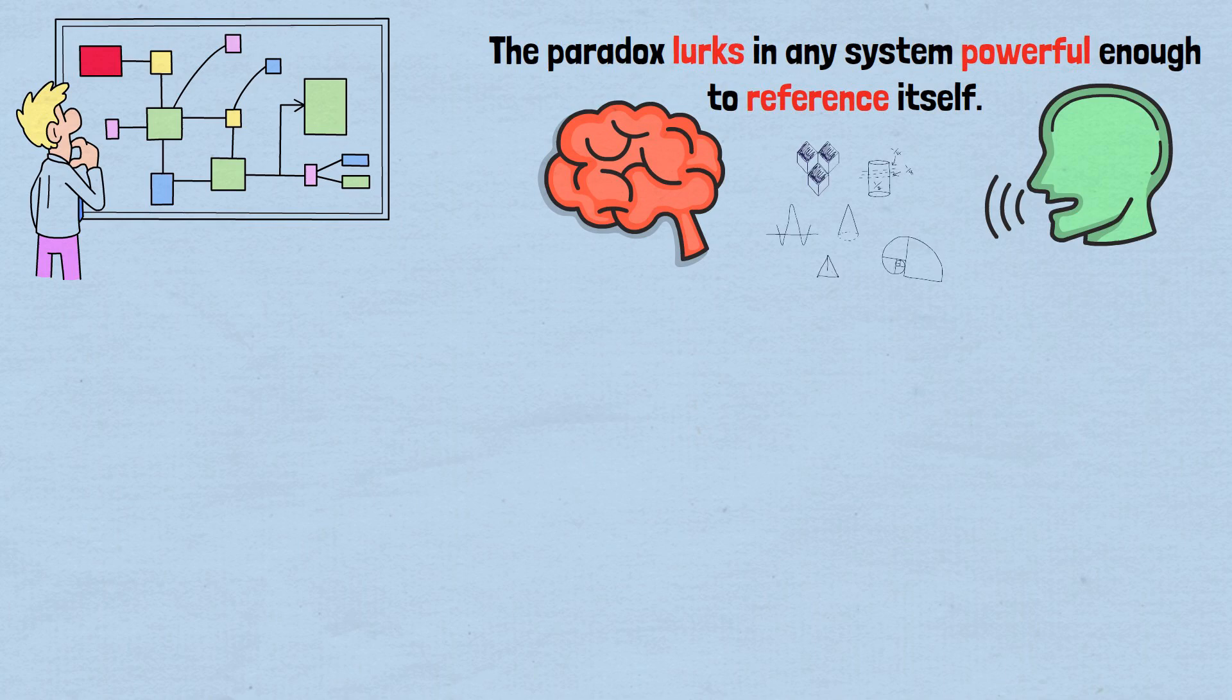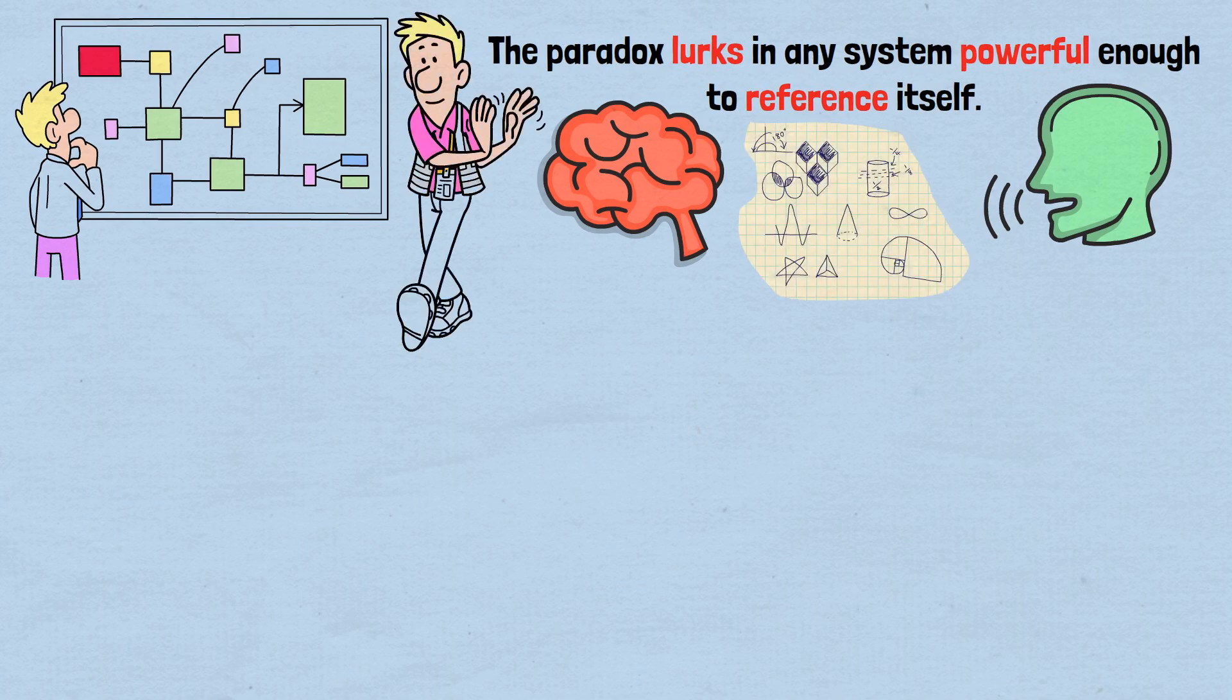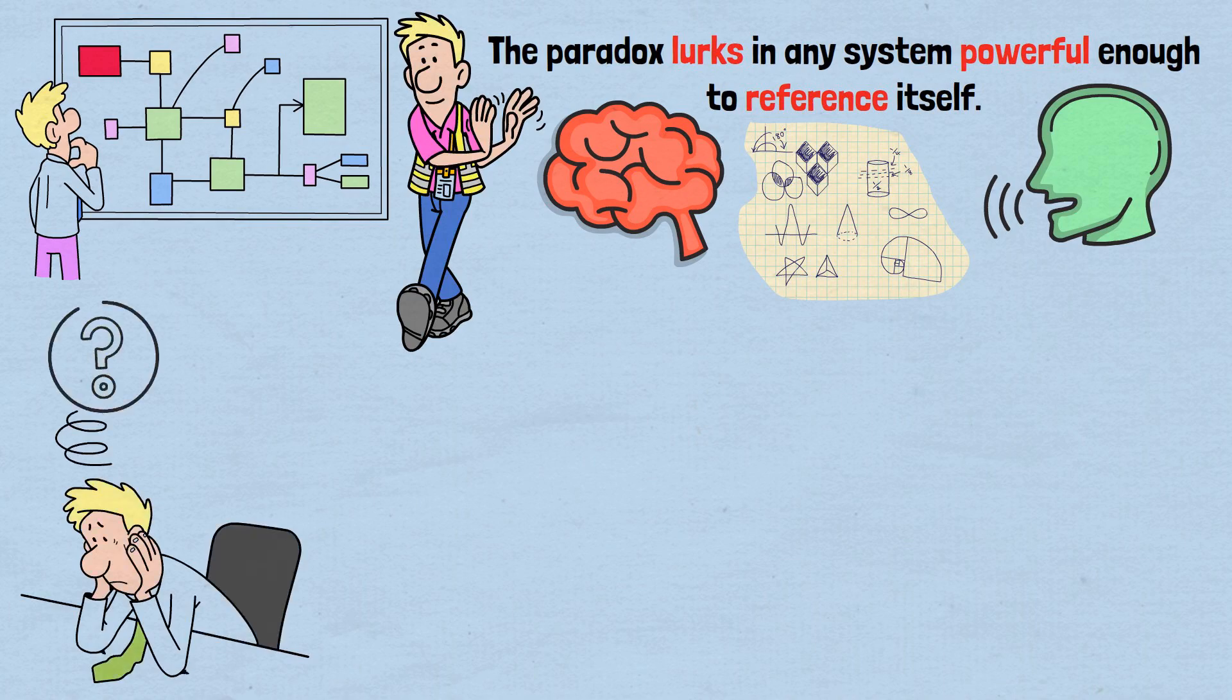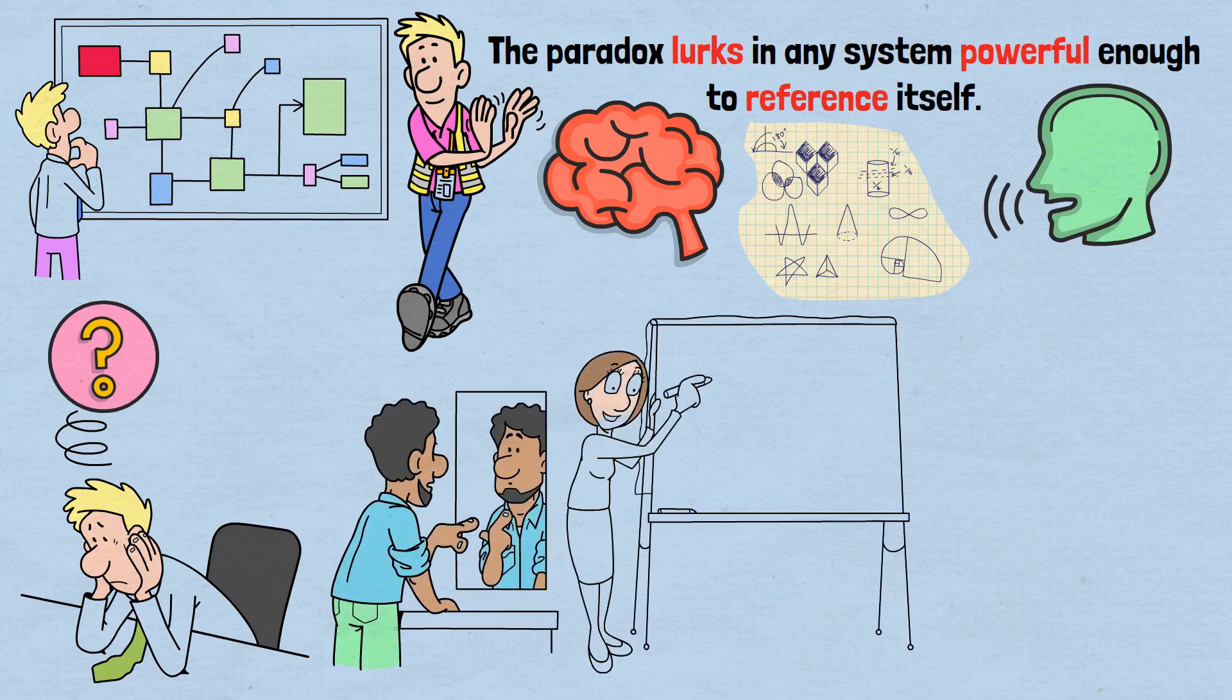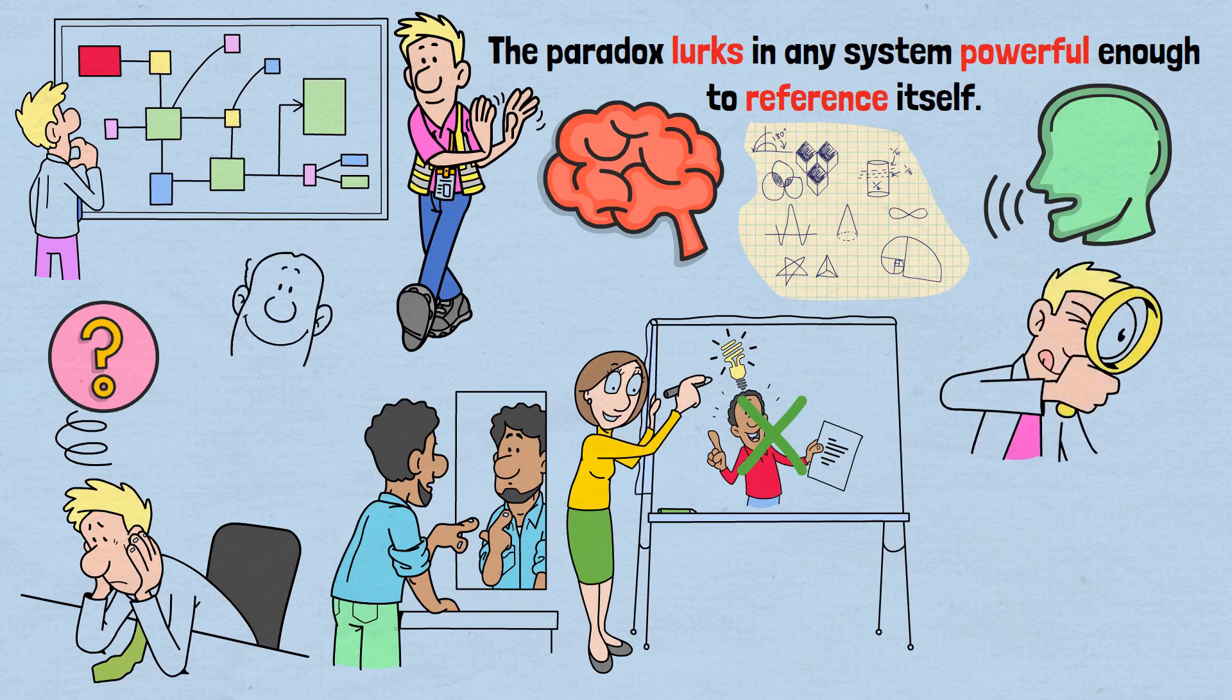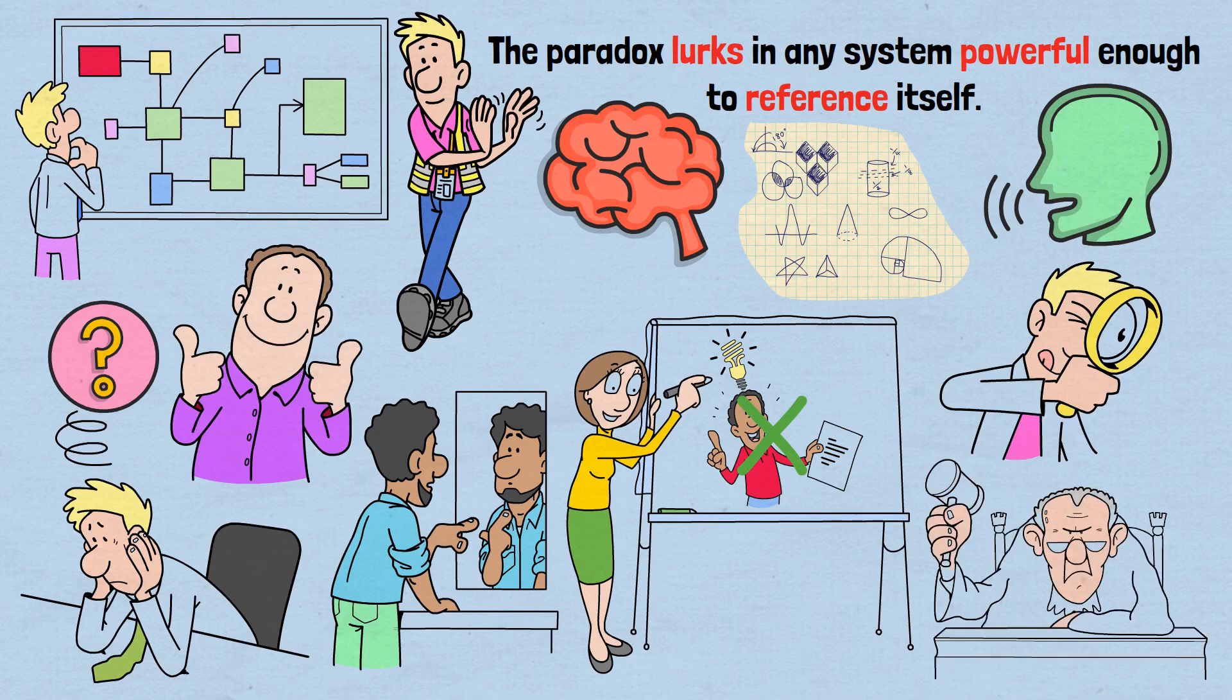In mathematics, we might restrict self-reference to avoid the paradox. But we can't eliminate it from our thinking without losing something essential about what makes us human, our ability to reflect on ourselves. Perhaps the most profound lesson of Russell's paradox is not that we need to solve it once and for all, but that we need to recognize and respect the boundaries it reveals. Just as physical laws constrain what's possible in the physical world, logical paradoxes like Russell's constrain what's possible in the realm of consistent thought.